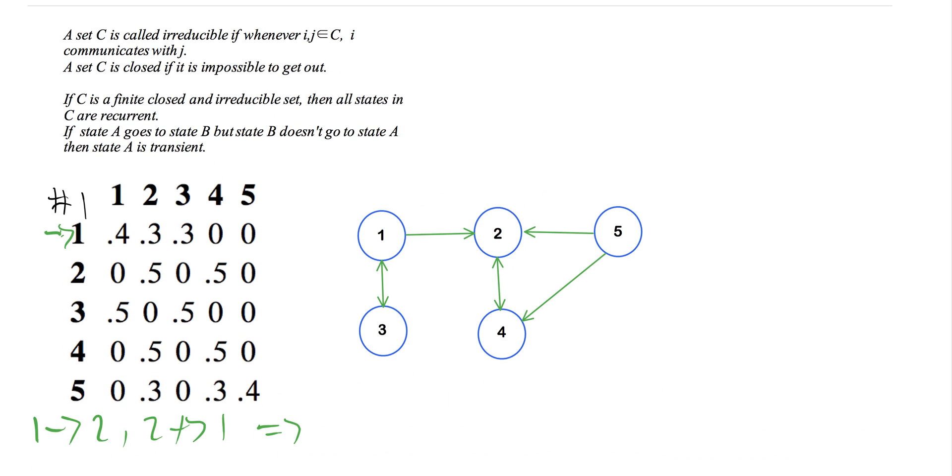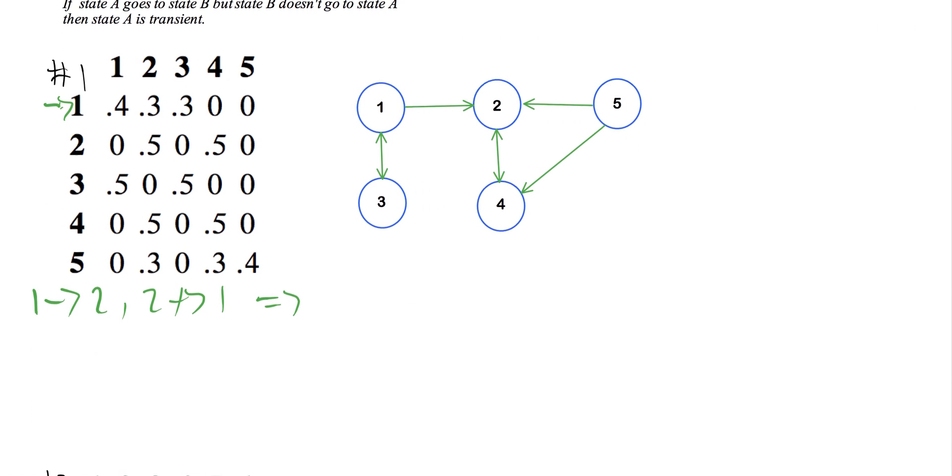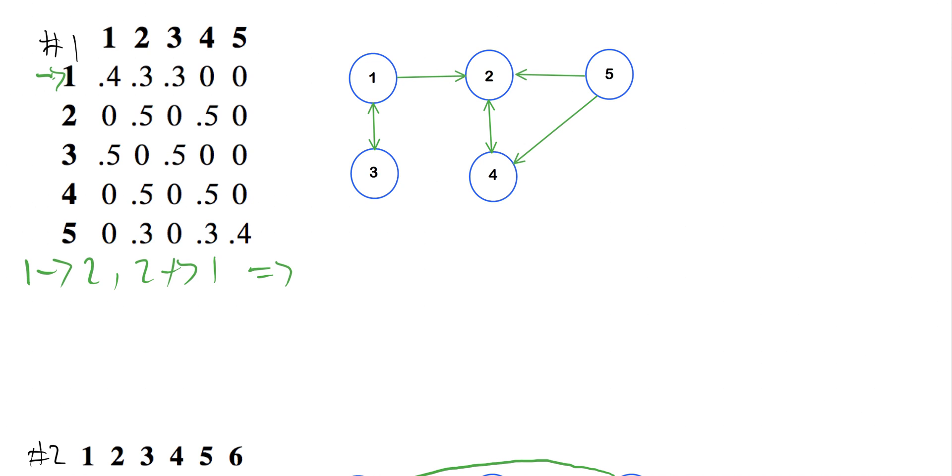if state a goes to state b, but state b doesn't go to state a, then state a is transient. So we've got one going to two, and two not going to one. Therefore one is transient.